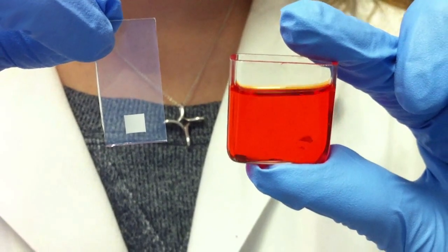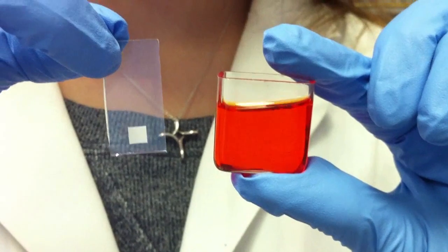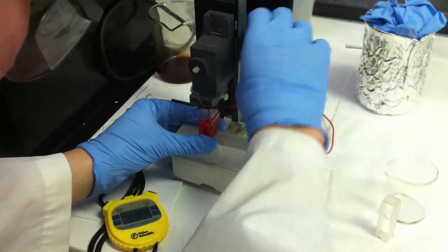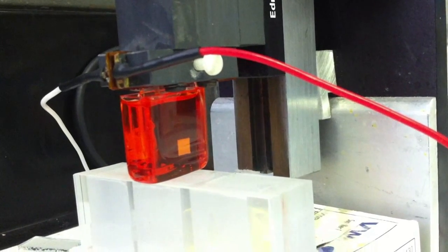Electrophoretic deposition allows us to deposit presynthesized colloidal quantum dots onto our photo anode. After submerging the electrode into the quantum dot solution, we use high voltage to drive the particles into the TiO2 network.